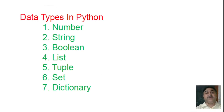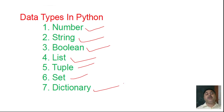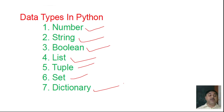What are the basic data types that Python has? First we have a number, then we have a string, then we have a Boolean, then we have a list, then we have a tuple, then we have a set, then we have a dictionary. All these things are there in this particular structure and frame.